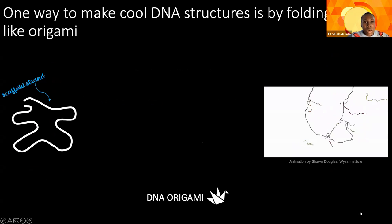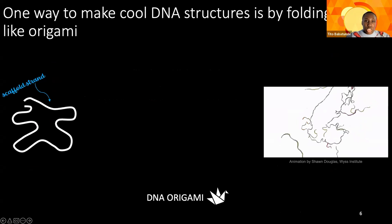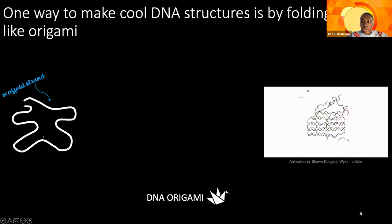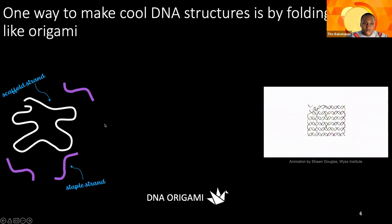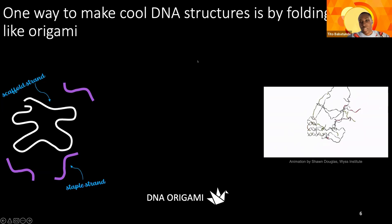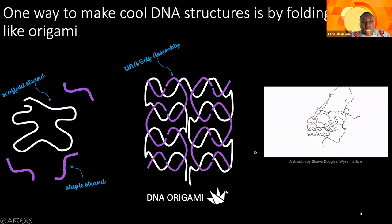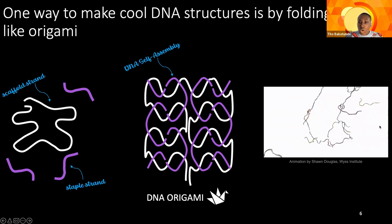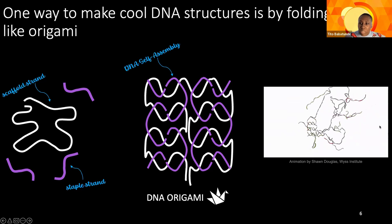One way to make a DNA nanostructure is by folding DNA — or DNA origami. The scaffold strand, shown in white, creates the structure, while the staple strands come in and, just like paper staples, hold the pieces of the scaffold together. In the middle, we can see DNA self-assembly using the scaffold in white and the staples in purple, and in the video to the right we can see how the staple strands hold the scaffold strand in place.